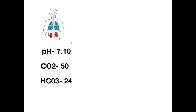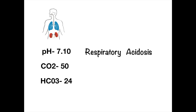The very first step is to identify whether this is acidosis or alkalosis. We look at the pH — it's 7.10. The normal range is 7.35 to 7.45, so we know that this is acidosis. The second step is to identify what is causing the acidosis. We look at the CO2, which is 50. The normal range for CO2 is 35 to 45, so this is the reason why we're having acidosis — respiratory acidosis. The bicarbonate is 24, within normal range, so there is no compensation.